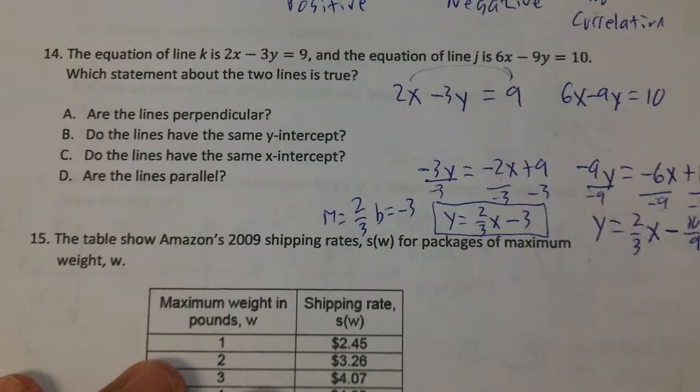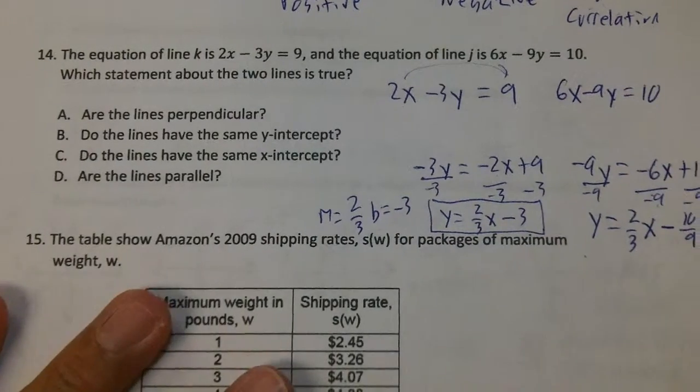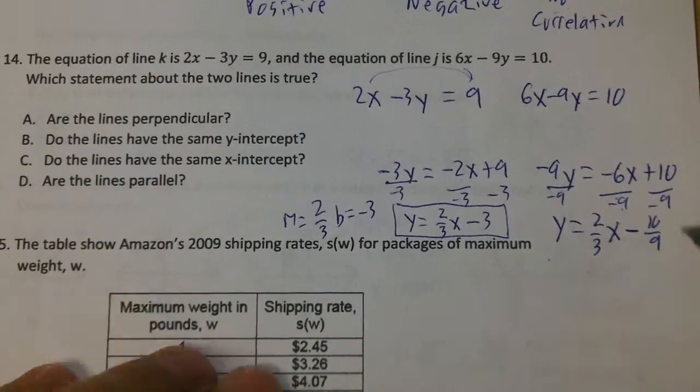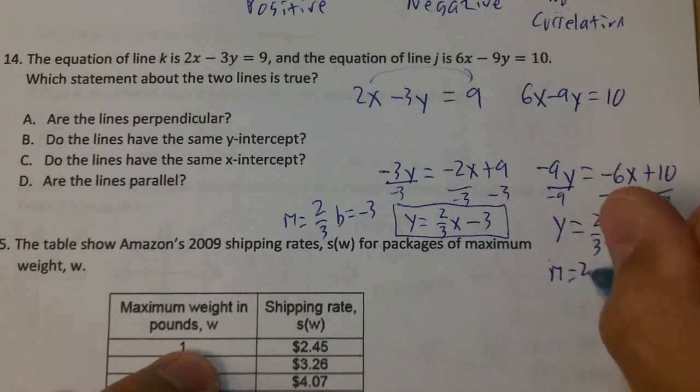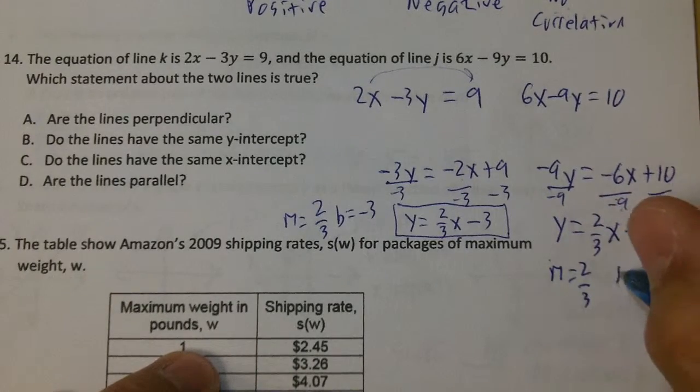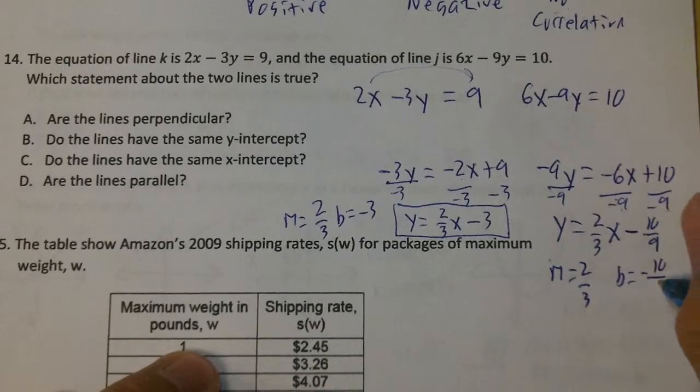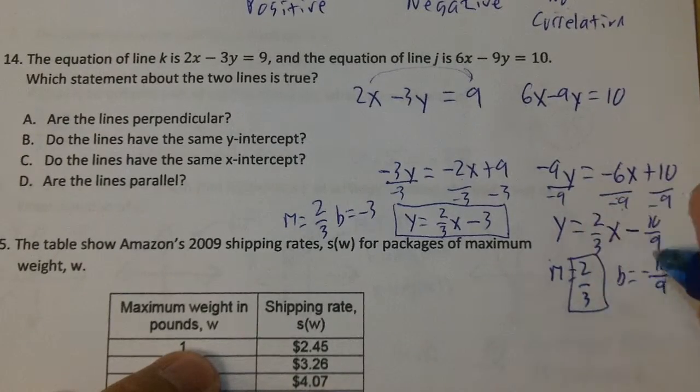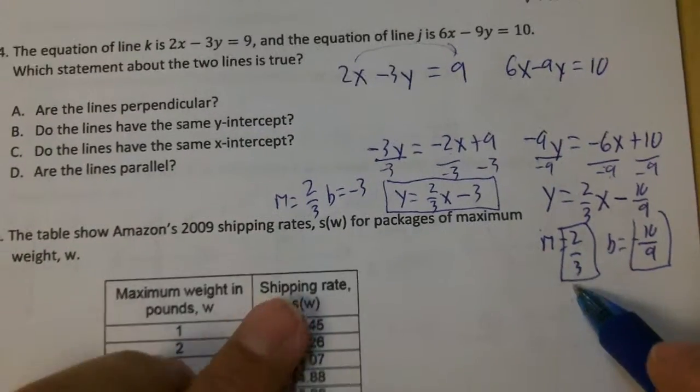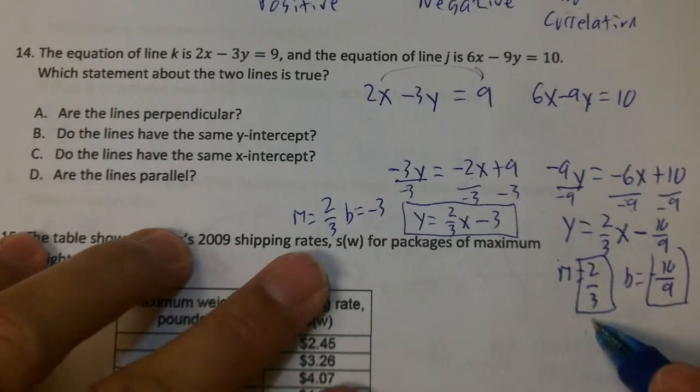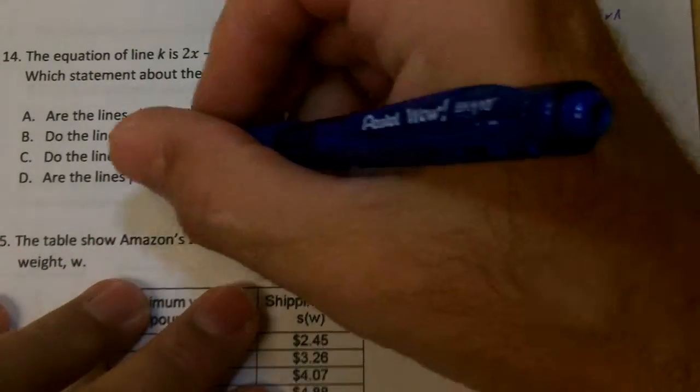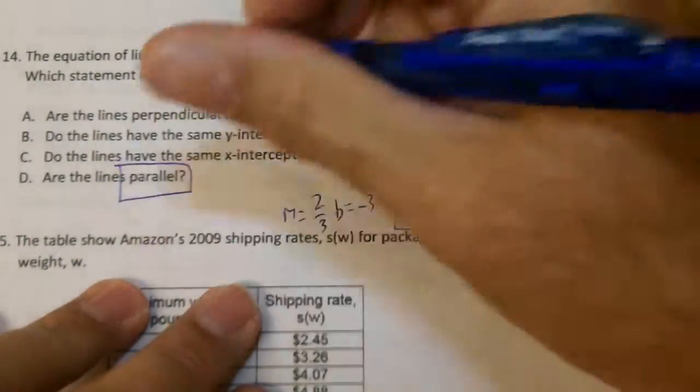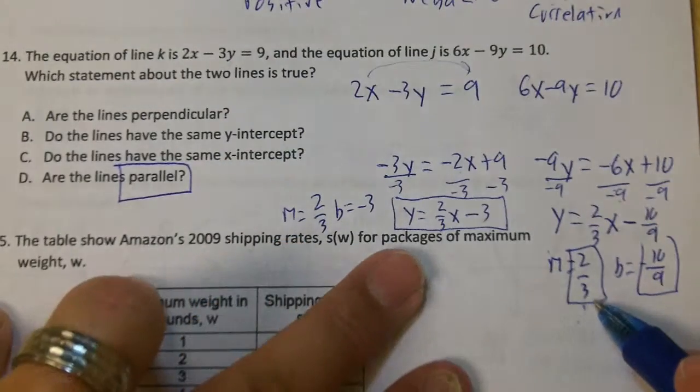So on this one right here, my slope is 2 over 3, and my y-intercept is negative 10 over 9. Notice the slopes are the same, right? The slopes are the same. That means the lines are parallel. These two lines are parallel because they have the same slope.